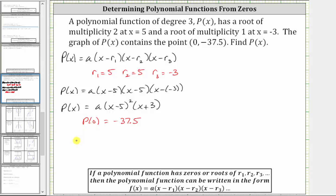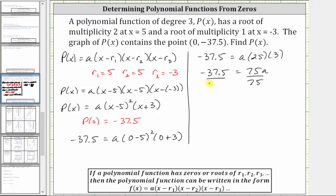Using this information, we now substitute zero for x and negative 37.5 for the function value here. This will allow us to find the value of a. Performing the substitution gives us negative 37.5 is equal to a times the quantity zero minus five squared times the quantity zero plus three. Simplifying, we have negative 37.5 equals a times the square of negative five, which is 25, times three. So we have negative 37.5 equals 75a.